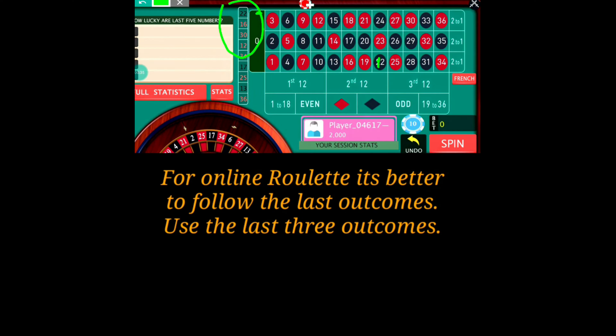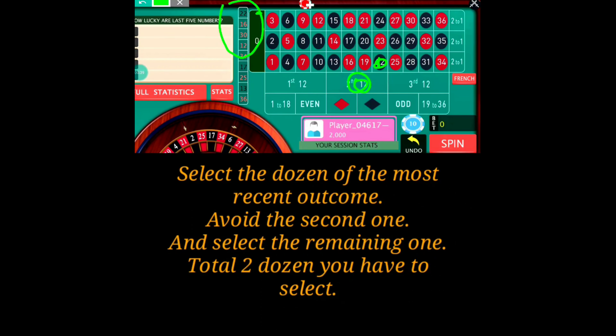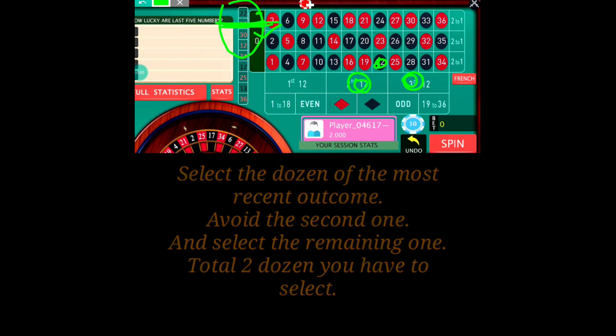We will use the last three outcomes. Simply go with the last outcome — for example, 22 — so I'll place the bet there. For the next bet, leave the second number, whatever that middle number is. For the next, it's 30, so go with 30. Just leave the middle number out of the last three outcomes. For this strategy, I have a bankroll of 2000, and I will use 10 unit bets.